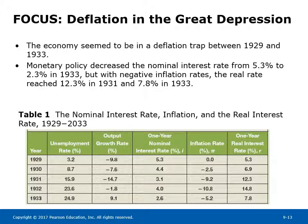Deflation in the Great Depression: Table 1 shows the economy appeared to be in a deflation trap between 1929 and 1933. Monetary policy decreased the nominal interest rate from 5.3% to 2.3% by 1933, but with negative inflation rates, the real rate reached 12.3% in 1931 and 7.8% in 1933.